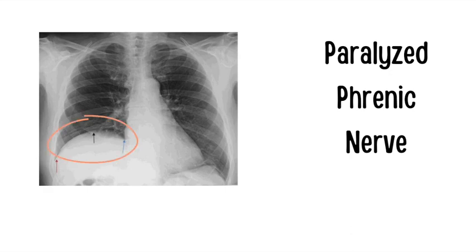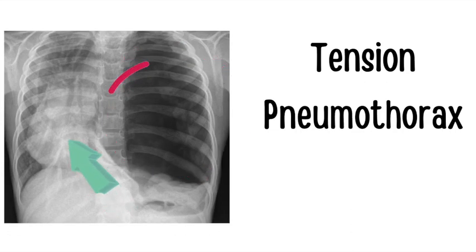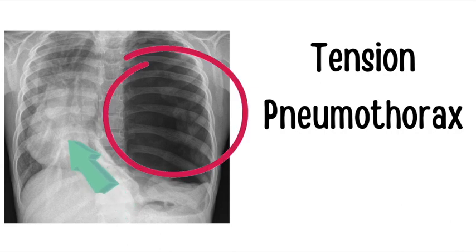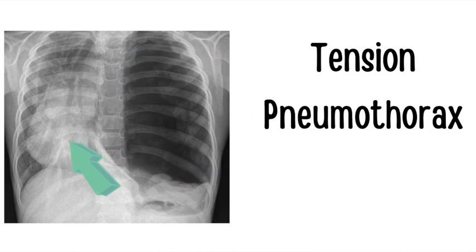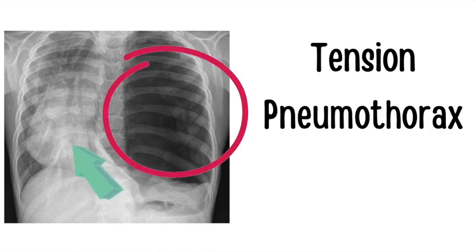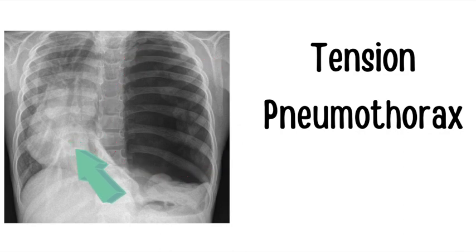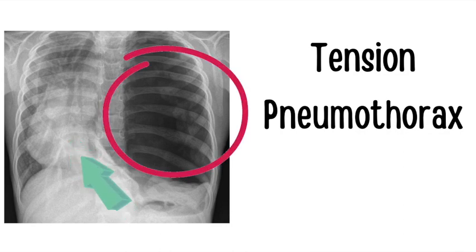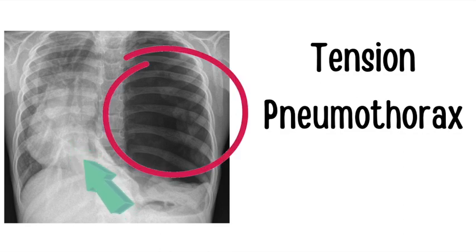Tension pneumothoraces are extremely high yield. This chest x-ray should not even have been taken, because we can have a strong clinical suspicion and even diagnosis using examination skills. On exam, note ipsilateral absent breath sounds, hyper-resonance, decreased fremitus, and tracheal deviation to the contralateral side. There may also be hypotension due to compression of the inferior vena cava.